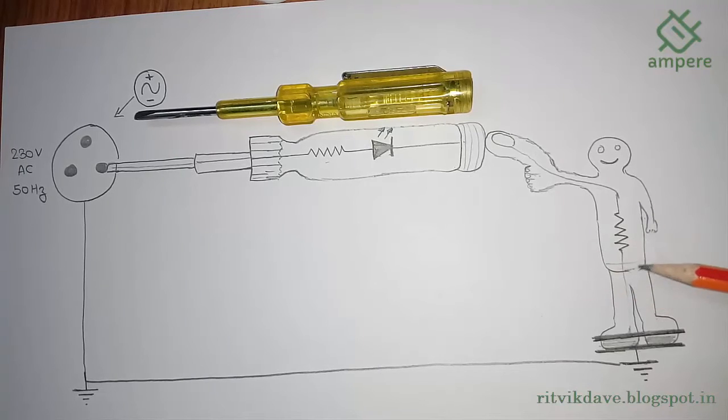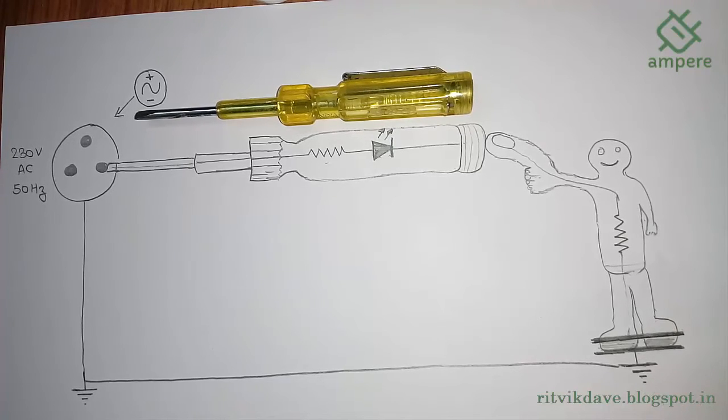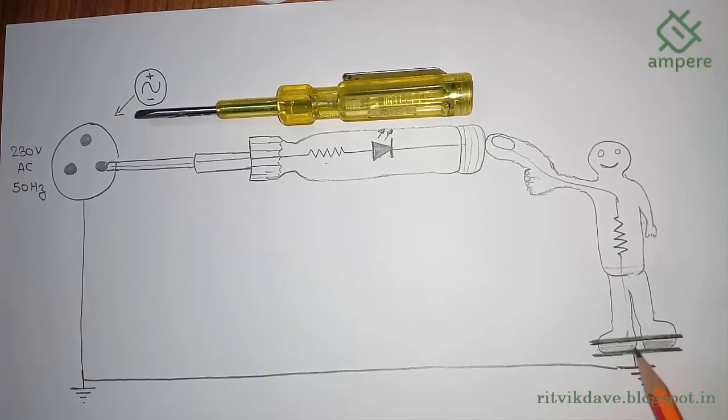It includes our body resistance, and these are the shoes or slippers which humans wear. The top plate of this capacitance is connected to our body, and the bottom plate is connected to ground or earth. So the sole of the shoe works as a dielectric.